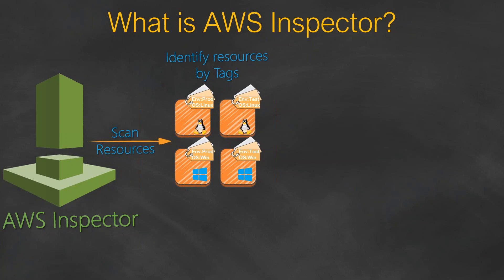Once you identify the resources you want to scan, you set the template — in other words, the rules package — that you want to use against your resources. There are four common rules packages available, and in addition you can make your own combination of these or have custom packages built into AWS Inspector.